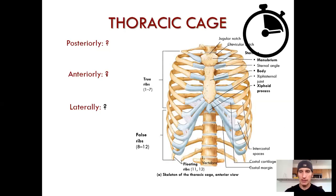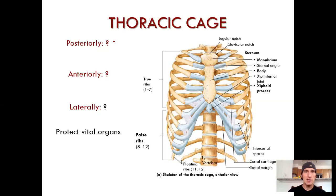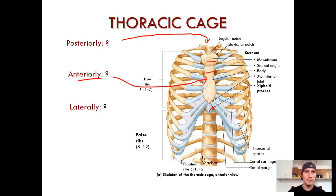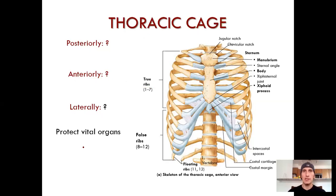We're back. I hope you answered the questions — remember, pause the videos and treat this like an actual lecture, jot notes down. Posteriorly it consists of your vertebral column; anteriorly it's the sternum and its three components, which we'll go over in a bit; and laterally it's the ribs and the costal cartilages.